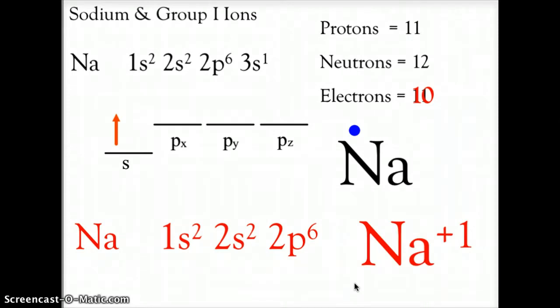All of the elements in that group 1 column, lithium, sodium, potassium, will all take on this plus 1 charge normally as part of their becoming ions.